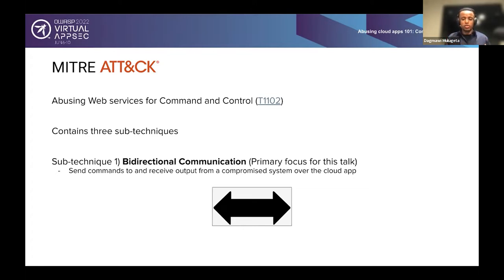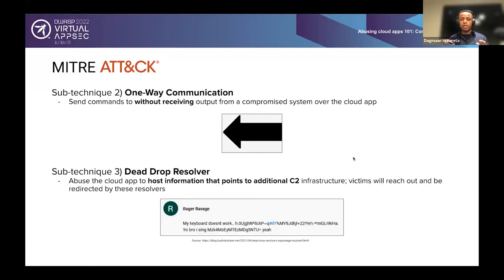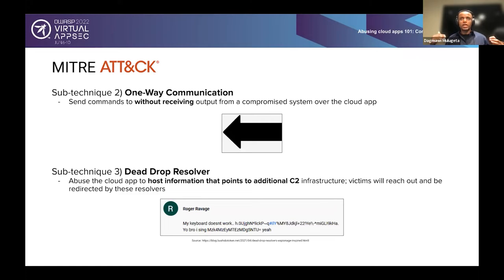While we won't cover the other two sub-techniques in depth, it's important to know they exist. The second sub-technique is one-way communication, where the attacker sends commands to the victim without receiving any output back — just the forward direction. You can think of it as another level of stealth from the attacker's point of view, wanting to blend in and lie low even more.